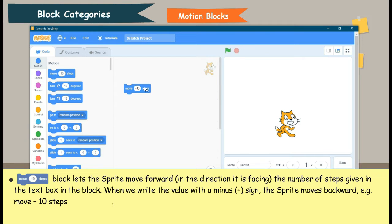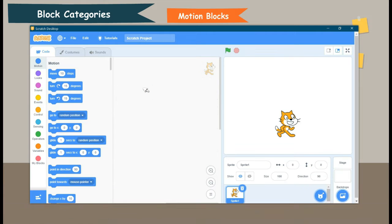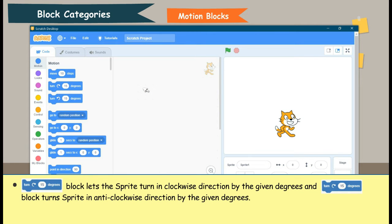For example, Move 10 Steps. Turn 15 Degrees block lets the sprite turn in clockwise direction by the given degrees and Turn 15 Degrees block turns sprite in anti-clockwise direction by the given degrees.